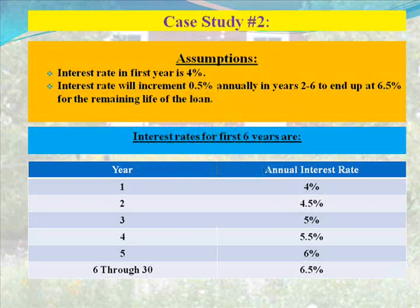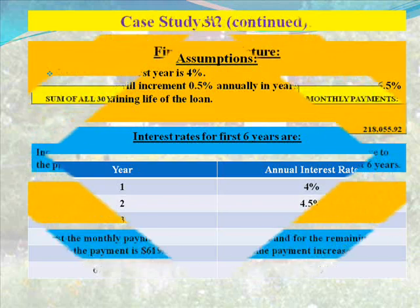Case study number two. Assumptions: the interest rate in the first year is 4%. The interest rate will increment 0.5% annually in years 2 through 6, to end up at 6.5% for the remaining life of the loan. The interest rates for the first six years are shown below, starting at 4% in year 1 and ending with years 6 through 30 at 6.5% annually.